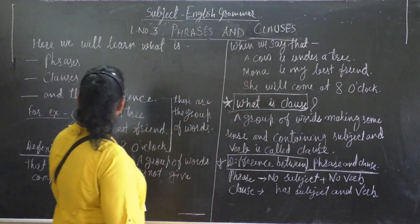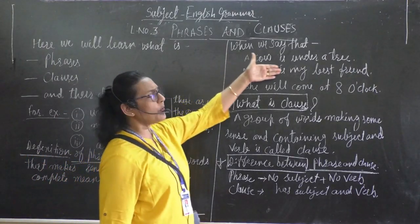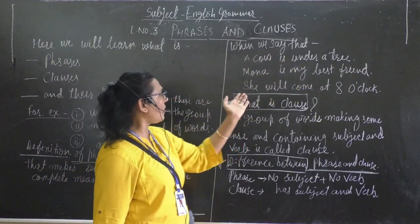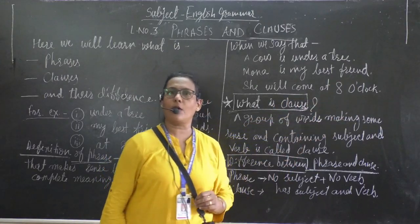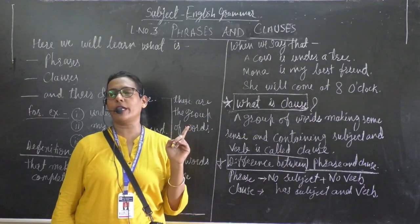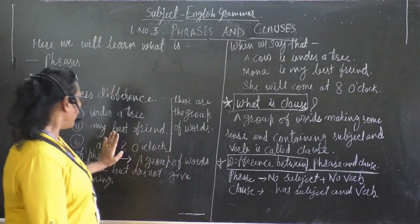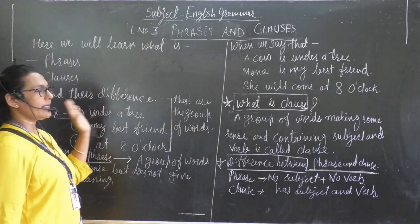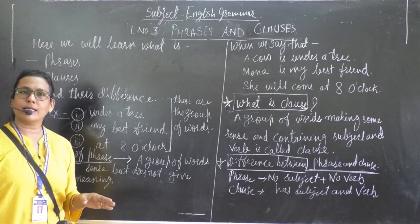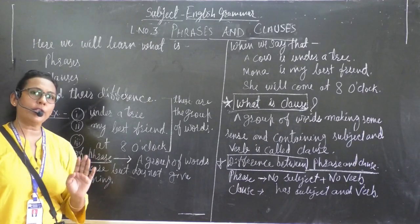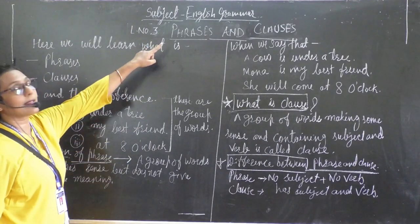So, a group of words that gives some sense but not the complete meaning is called a phrase. But when the group of words gives complete meaning — for example, 'she will come at 8 o'clock' — you are getting the complete meaning. So, a phrase is the group of words that gives some sense but not the complete meaning.